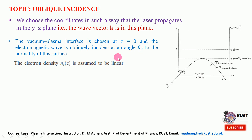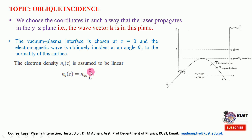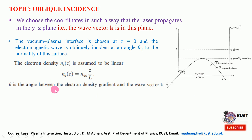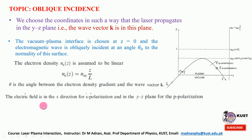The wave vector has two components, y and z, inside the plasma medium. The density n as a function of z is assumed to be linear — the density increases as you move toward higher z. Theta is the angle between the electron density gradient and the wave vector k. The electric field is in the x direction for s-polarization and in the y-z plane for p-polarization.